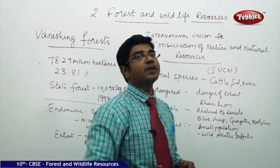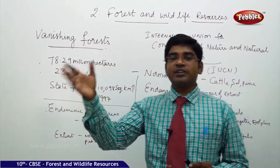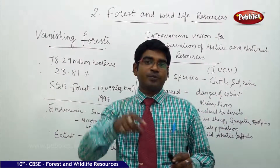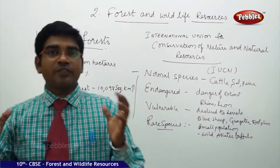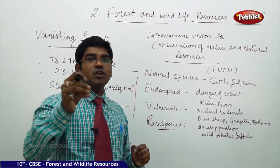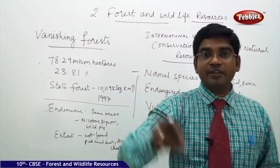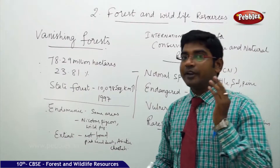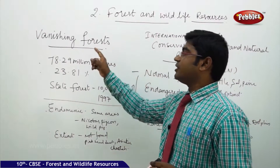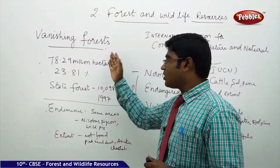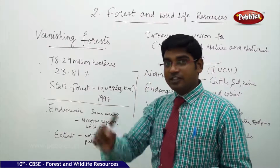India's total area is around 329 million hectares, and one third — nearly 33% — means about 109 million hectares of Indian forest should be present. That is according to the National Forest Policy of India, 1952, which states that 33% of the land of any country should be covered with forest to maintain ecological balance. But according to available statistics, 78.29 million hectares is not sufficient; we need 33%.